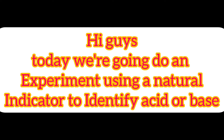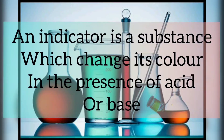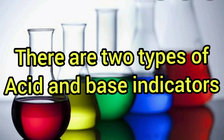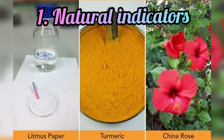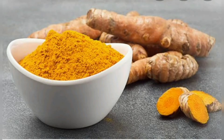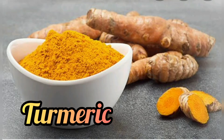Today we are going to do an experiment using a natural indicator to identify whether a substance is acidic or basic. An indicator in chemistry is a substance that changes its color in the presence of acid and base, telling us whether the substance is acidic or basic. There are usually two types of indicators: natural indicators and laboratory indicators.